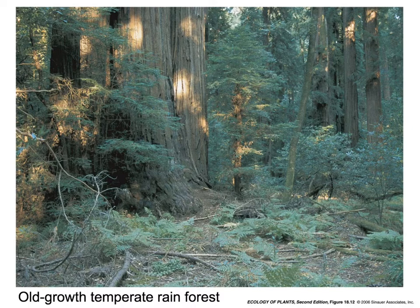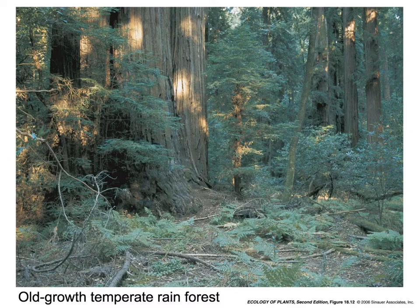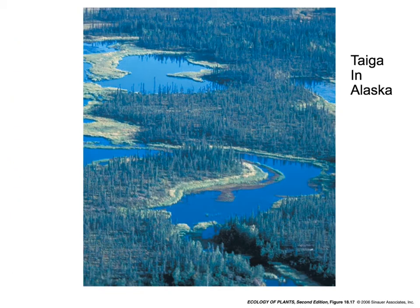An interesting phenomenon here is canopy roots, where trees make adventitious roots on their branches to soak up nutrients from the epiphytes growing on them. Here's some taiga — intermediate in rainfall, kind of dry, dominated by gymnosperm small trees.